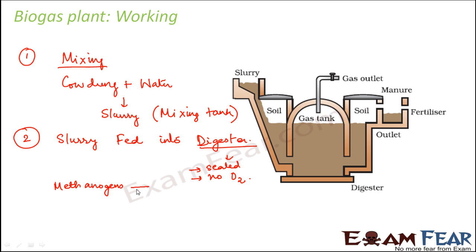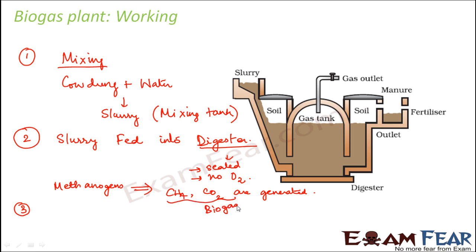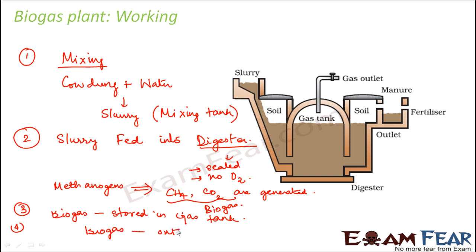As a result, gases like CH4 and CO2 are generated by the process of anaerobic respiration. These gases together form the biogas. The biogas gets stored in the gas tank, and then it is taken out through the outlet. This is how the entire process of biogas production takes place.